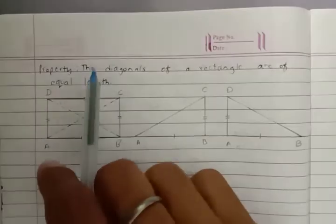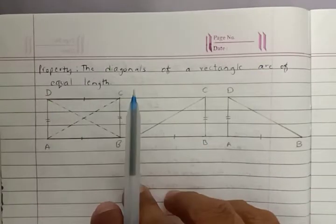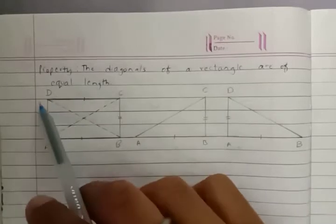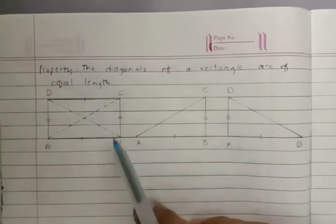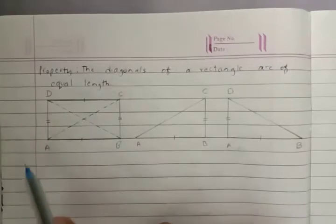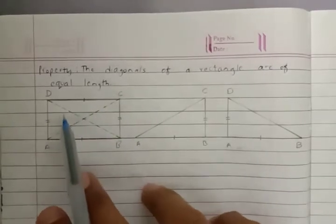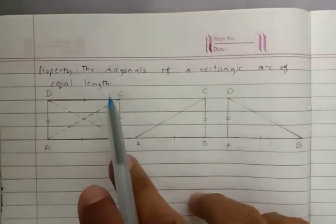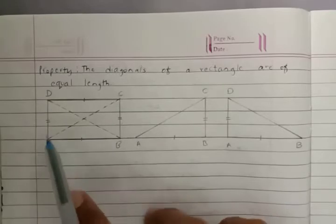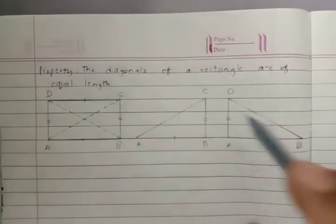Now let us learn that the diagonals of a rectangle are of equal length. We will prove that the diagonals of a rectangle - diagonal DB and diagonal CA - are the two diagonals of rectangle ABCD. We have to prove that these two diagonals are of equal length. We will divide rectangle ABCD into two triangles: triangle ABC and triangle DAB.